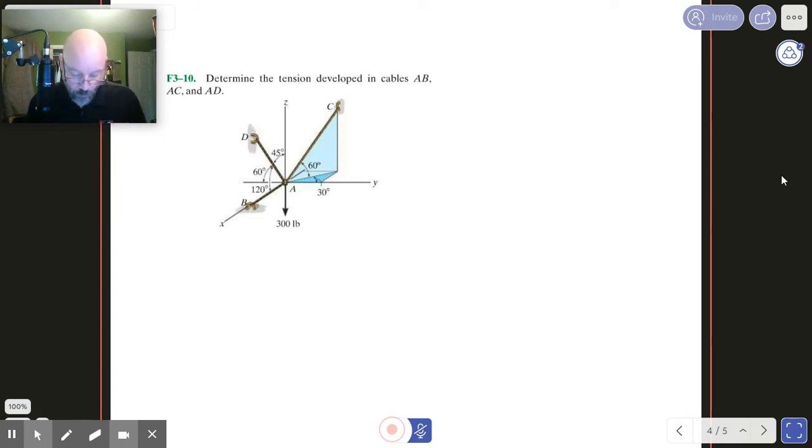So when we look at this, we've got one, two, three, four vectors. There's the 300 pounds, which is straight down. There's vector C, and we can see clearly where vector C is. It's kind of above, what would that be, above quadrant two. Wouldn't this be quadrant two back there in the x and y plane?